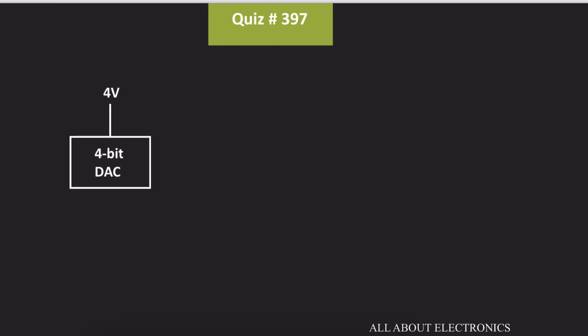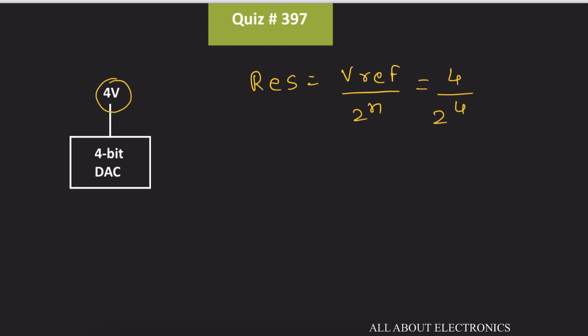In general, we know that for an n-bit DAC, if V-reference is the reference voltage, then its resolution is equal to V-reference divided by 2 to the power n. For simplicity, let's say the reference voltage of the 4-bit DAC is equal to 4V. In that case, the resolution will be equal to 4 divided by 2 to the power 4, which is equal to 0.25V. That means with the given reference voltage, the resolution of the 4-bit DAC will be equal to 0.25V.